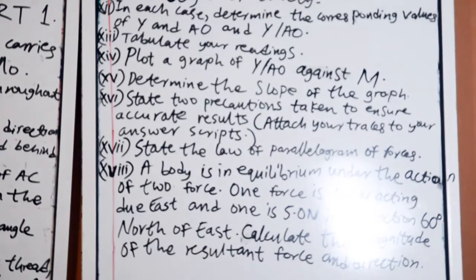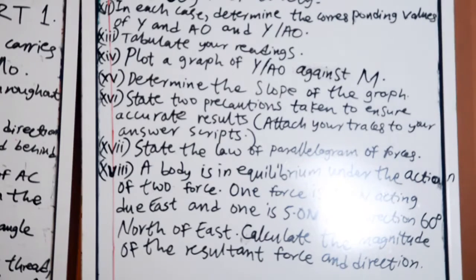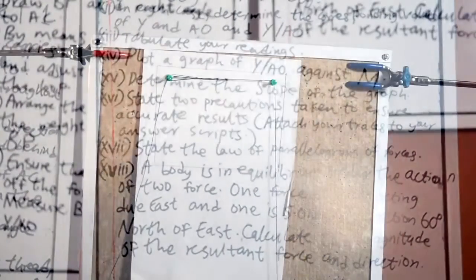Eighteen: A body is in equilibrium under the action of two forces. One force is four newton acting due east and one is five newton in a direction 60 degrees north of east. Calculate the magnitude of the resultant force and direction.